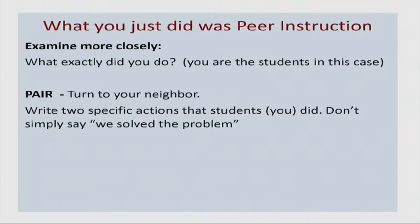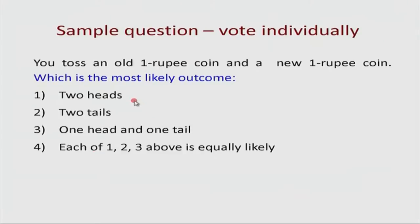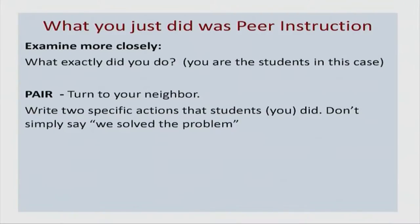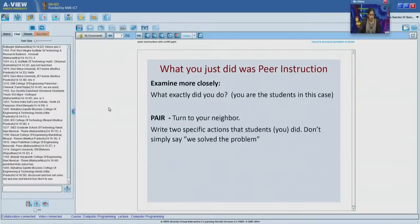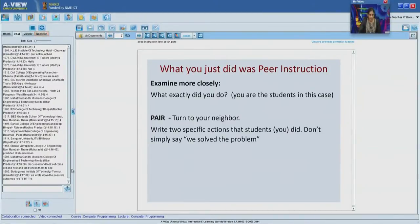For those still voting: please consider the four different cases — two coins, each can be a head or tail, giving four possible outcomes. Write them down and you will see what the right answer is. The teacher is making students do all these tasks in order to answer the question. Some of you are saying students were writing the possible outcomes, discussing with each other — did any of you change your answer after talking to your neighbor?